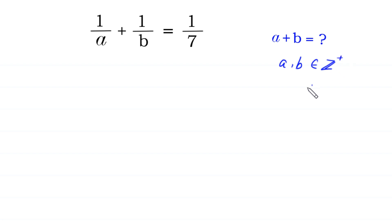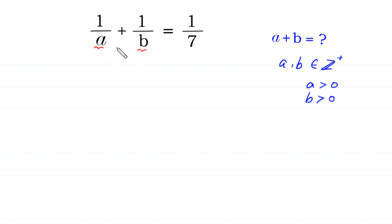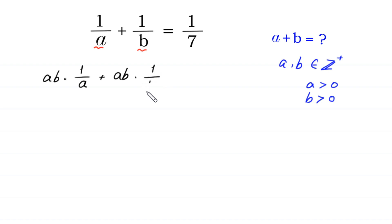It means a is greater than 0 and b is greater than 0. First of all, we multiply both sides of this equation by the LCM of a and b. The LCM of a and b is ab, so we multiply both sides of this equation by ab. ab times 1 over a, plus ab times 1 over b, is equal to 1 over 7 times ab.